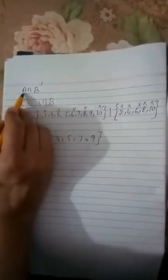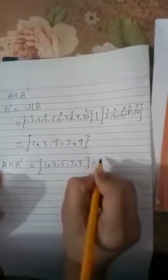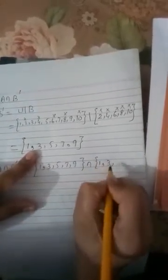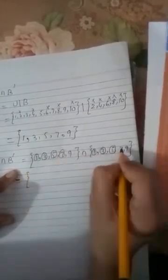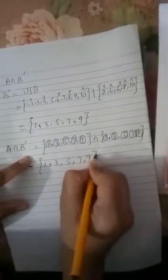Now B complement is intersected with A. According to the question we write set A, which is {1, 3, 5, 7, 9}, intersection B complement, which is also {1, 3, 5, 7, 9}. In intersection we take common elements. The elements 1, 3, 5, 7, and 9 are all present in both sets. So the answer of A intersection B complement is {1, 3, 5, 7, 9}.